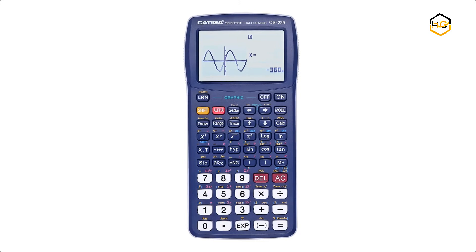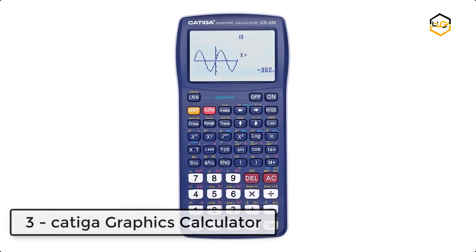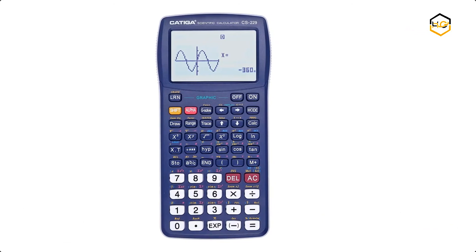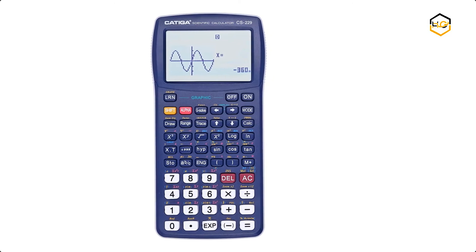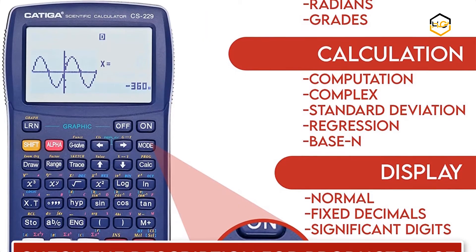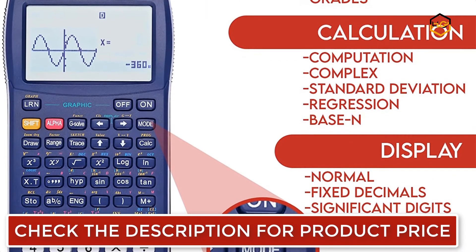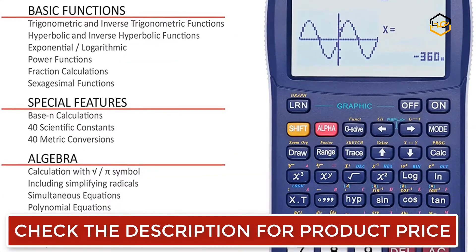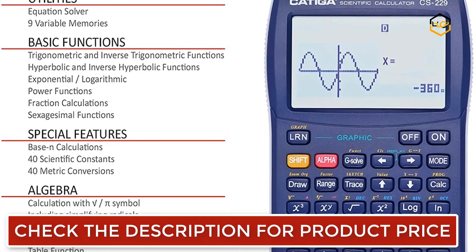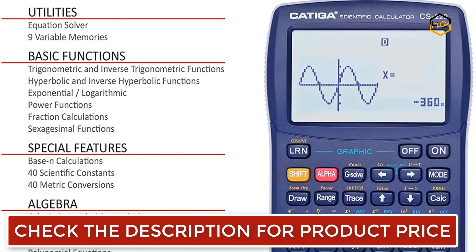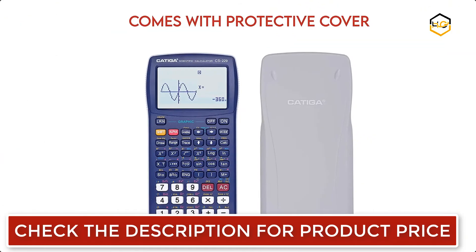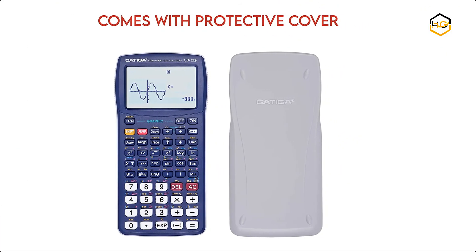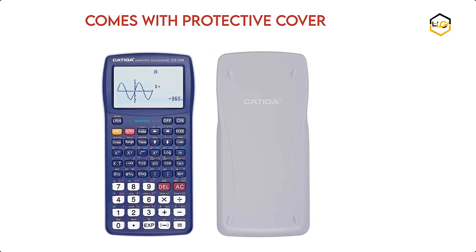At number 3, we have Katika Graphics Calculator. This is a scientific calculator that is able to show graphs of formulas. It features a screen large enough to display graphs and equations simultaneously, allowing you to see calculations and corrections in high detail. Its 7x3.3 inch size ensures comfortable use, and it features 3 operating modes: angular measurement, calculation, and display modes.